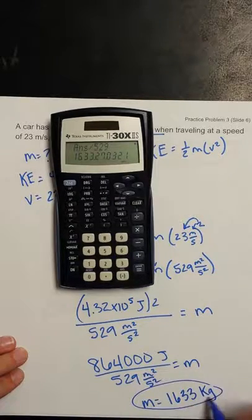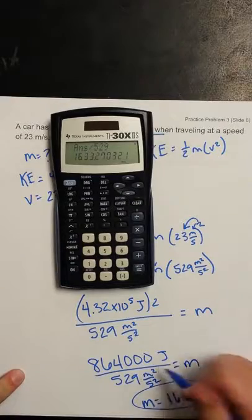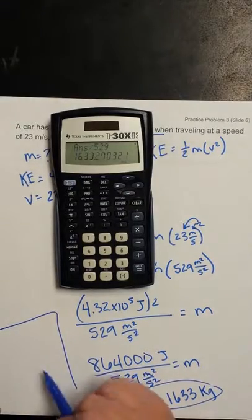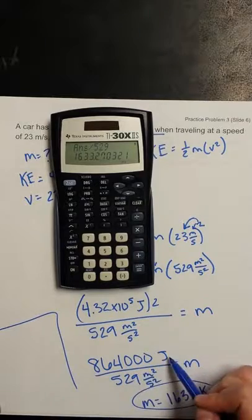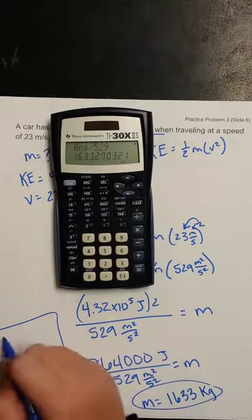Now if you can remember that this should be in kilograms as long as everything is in SI units, that is fine. However, similar to the last problem, let's go ahead and just take a little segue to see how we can take joules divided by meters squared per second squared to get kilograms.